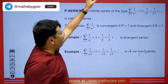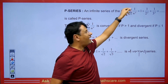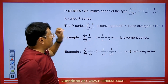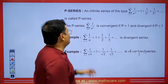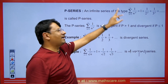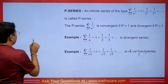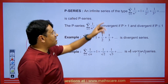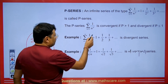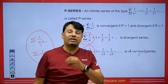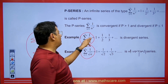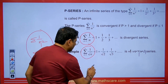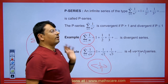Now let's discuss the P Series. If we have any infinite series of the form: sum from n = 1 to infinity of 1 upon n to the power p, and we continue putting values of n, we get a series. For what value of p does it converge? If the value of p is greater than 1, the series is convergent — for example, 1 upon n squared or 1 upon n cubed. If the value of p is 1 or less than 1, for example 1 upon n or 1 upon square root of n (where p = 1/2), then the series is divergent. Note that the sequence 1/n is convergent, but the series 1/n is always divergent.